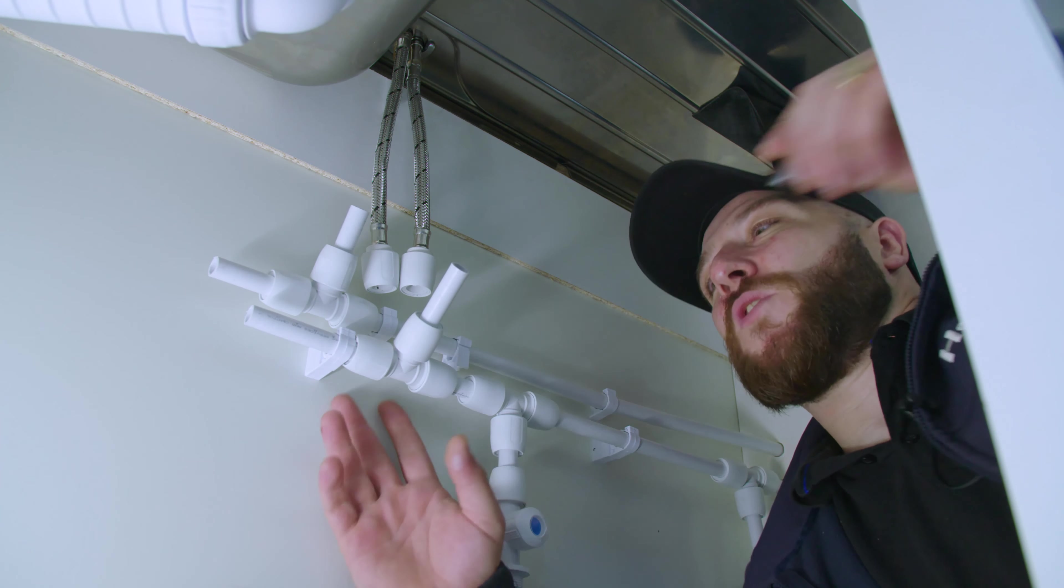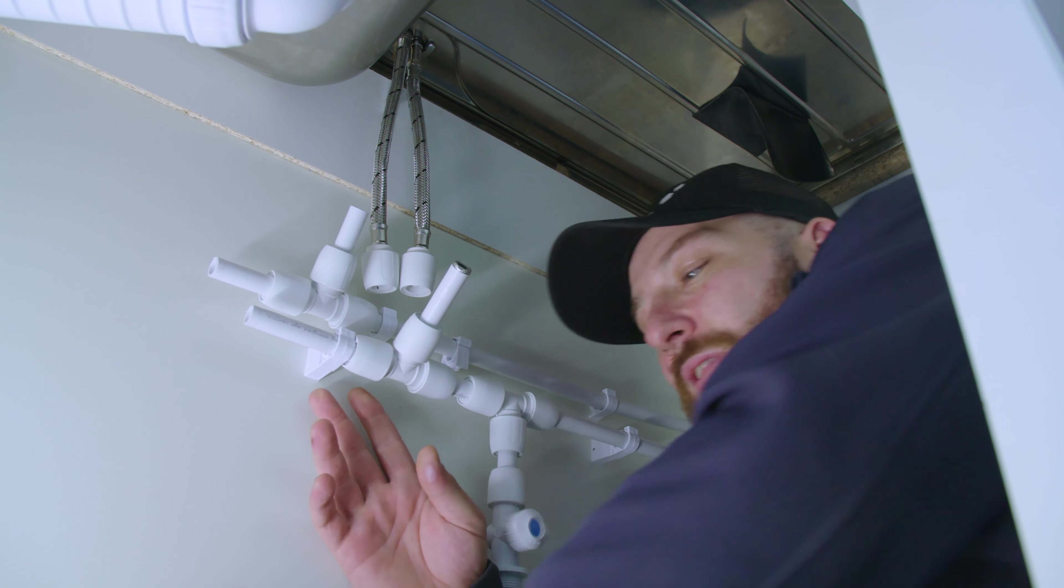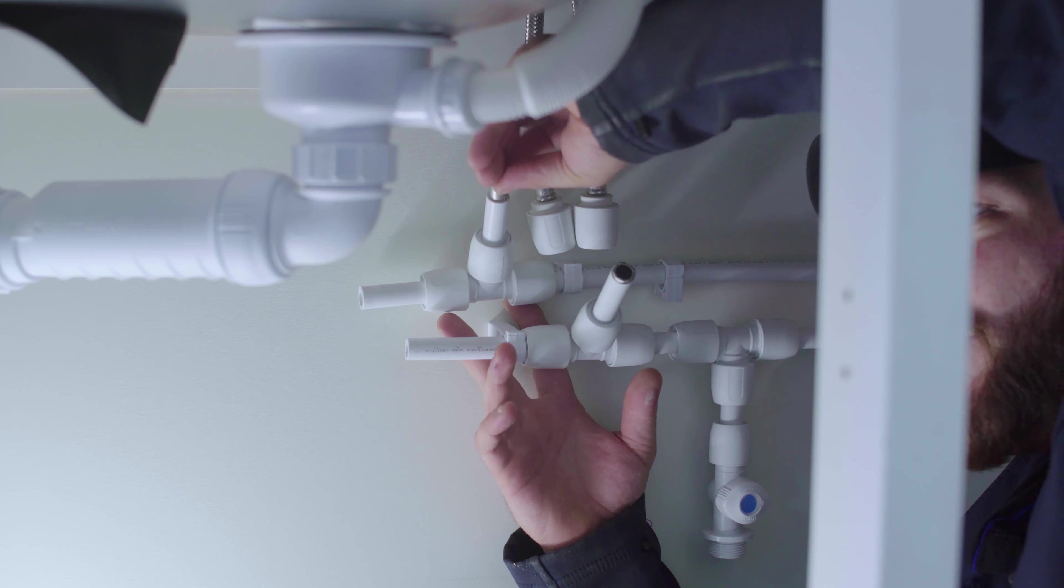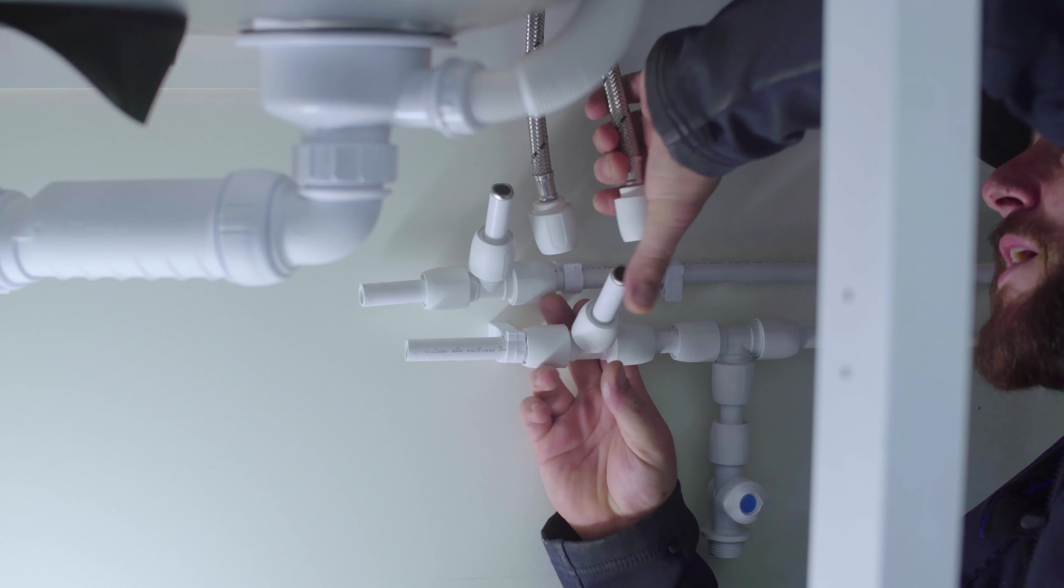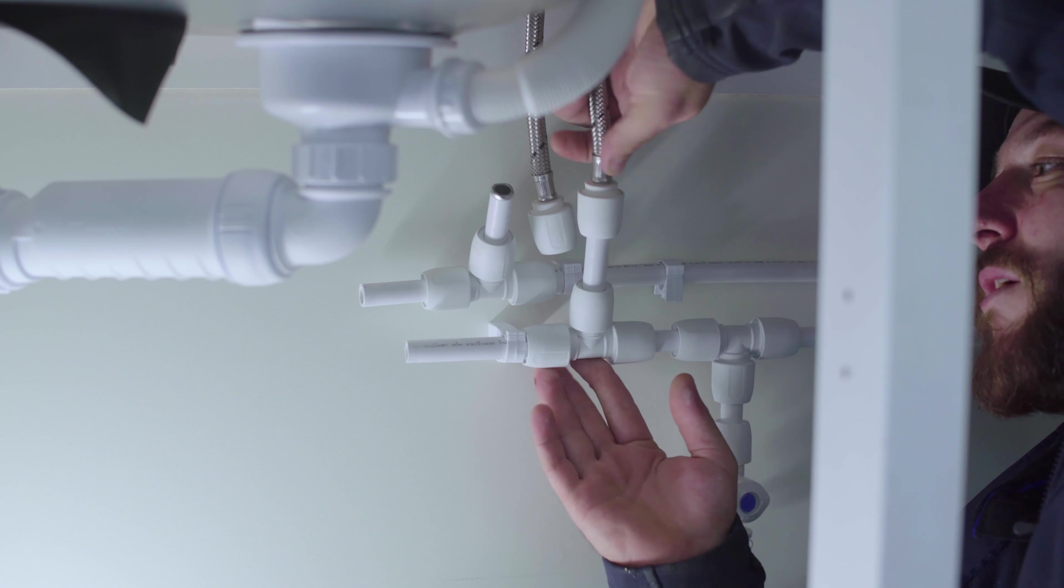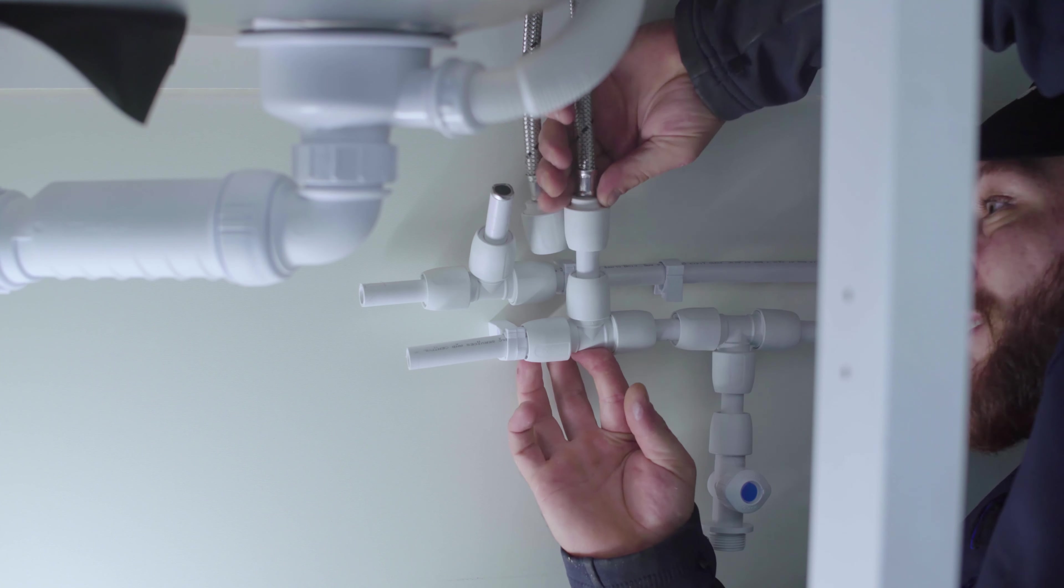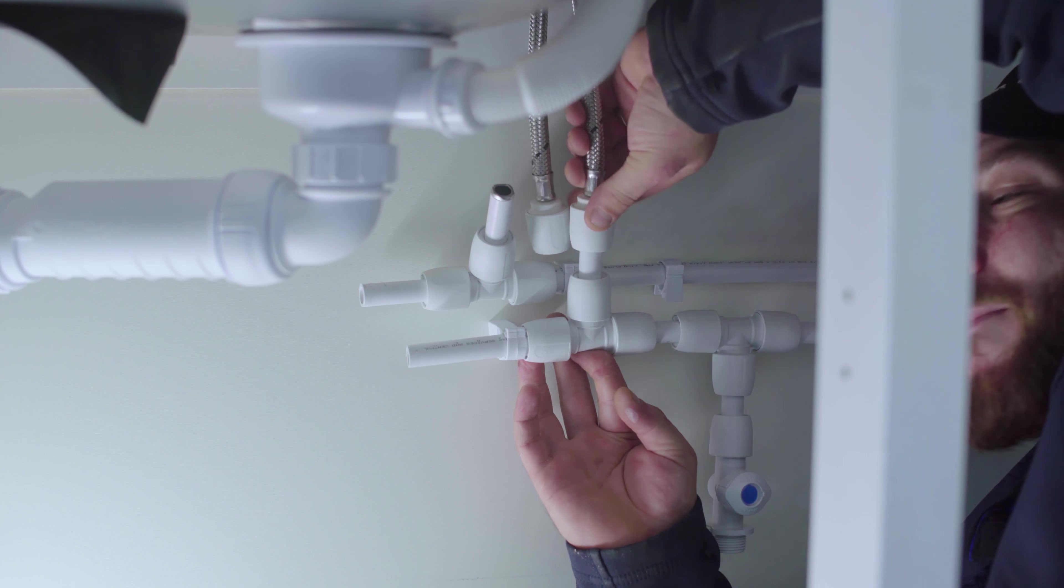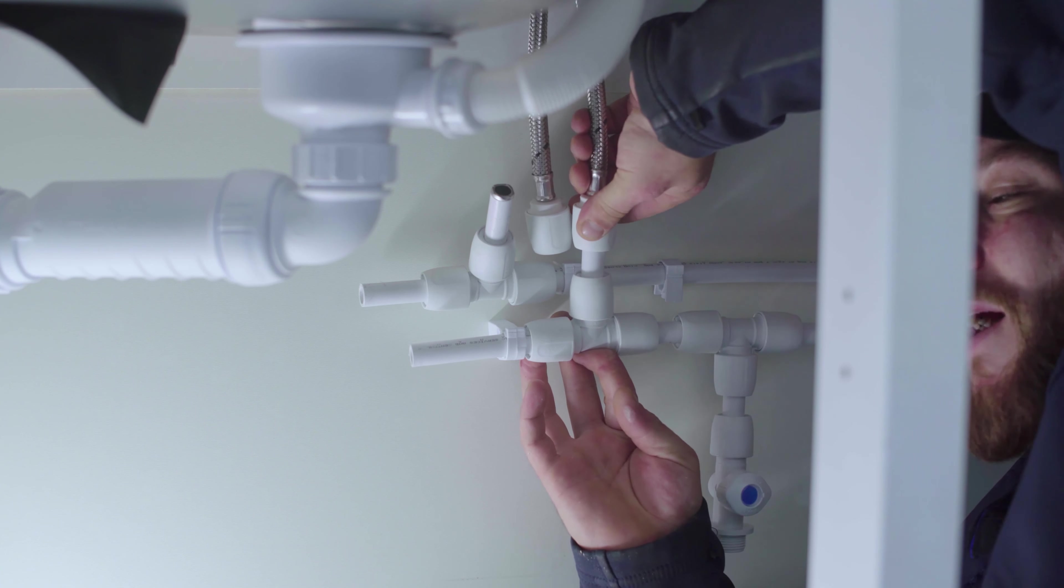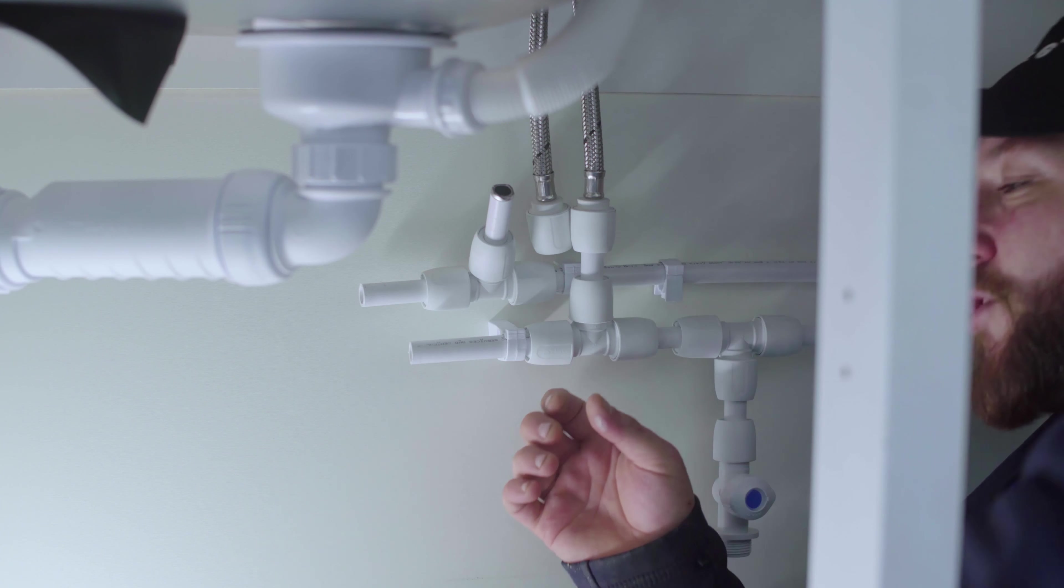What we're going to do first is put the inserts in the hot and the cold pipe, nice and simply like so. Then what we will do is get one of the pipes and we push on. Very simple to do. A little twist to ensure that we feel the rumble, and that makes sure that the pipe and the joint is safe and it's in for sure.